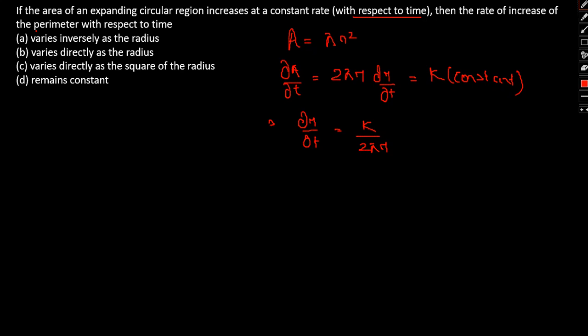Now, we need to look at the rate of increase of perimeter. So perimeter is given by P = 2πr. We will denote P = 2πr.